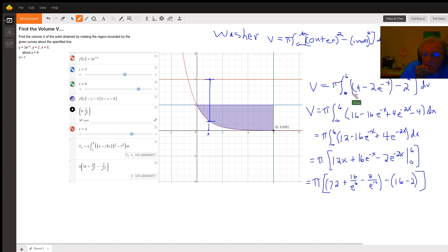Let me go to red. This is the outer radius squared. The inner radius is just going from the axis of revolution to the inside region. And that distance is 4 minus 2, or 2, the inner radius squared.